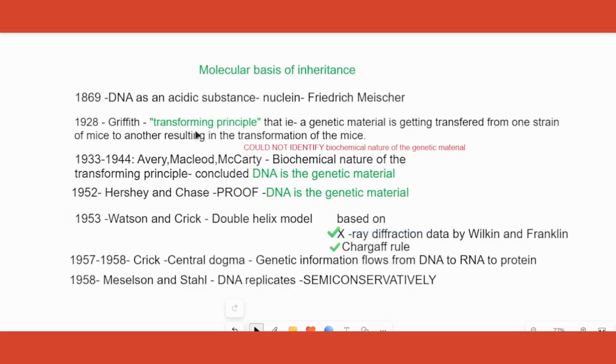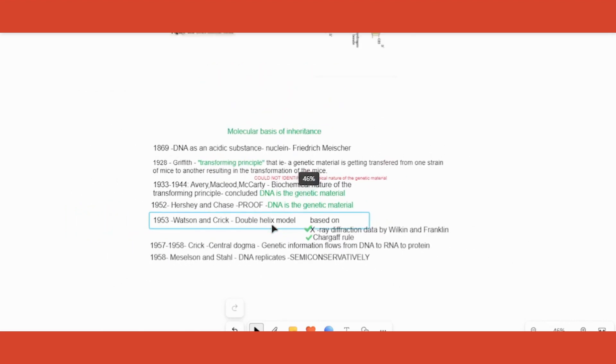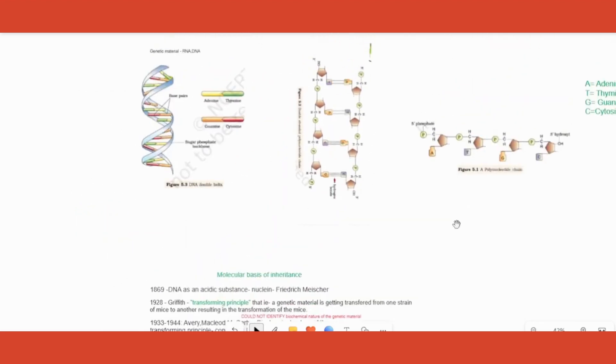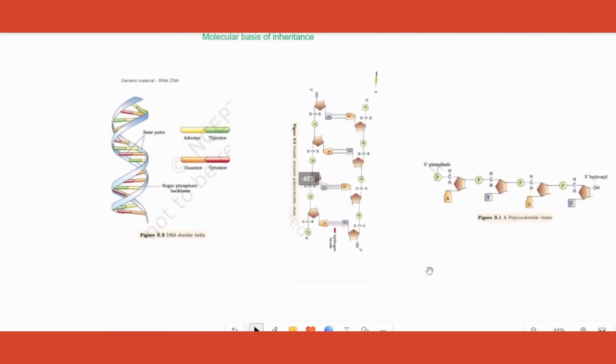and as you remember they used different data, one from X-ray diffraction by Wilkin and Franklin, another is the rule called Chargaff's rule to come up with a double helix model. So let us understand the double helix model today. This is the model that gave them Nobel Prize for the same.